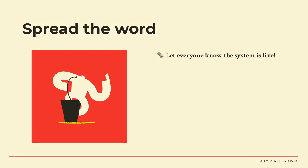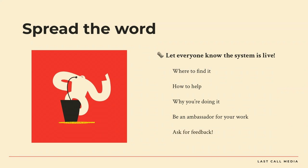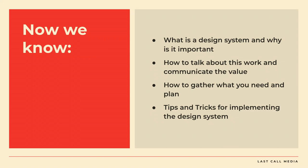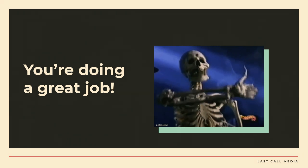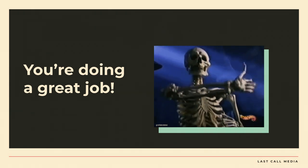Now it's time to spread the word. Let everyone know that your design system is live and that you're still working on it. Let them know where to find it, how they can help, and why you're doing it. Be an ambassador for this work. Ask for feedback. So now we know: what is a design system, why it's important, how to talk about and communicate the value of this work, how to gather what you need and make a plan, and some tips and tricks for implementing the design system. You're doing a great job. It can seem silly from the outside, but it really does speed up stuff.